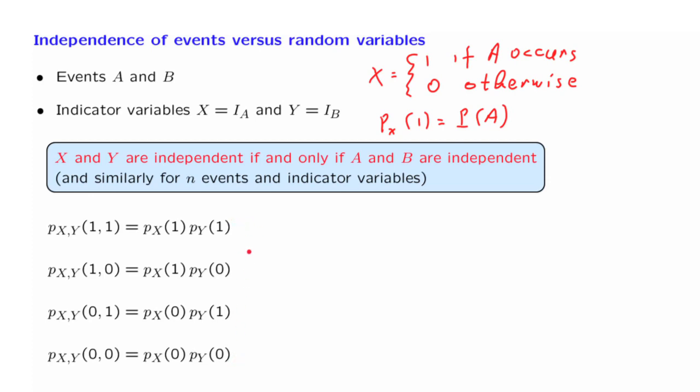So suppose that this is true, that the random variables are independent. Let us take this first relation and write it in probability notation. The random variable X taking the value of 1, that's the same as event A occurring. And random variable Y taking the value of 1, that's the same as event B occurring. So the joint PMF evaluated at (1,1) is the probability that events A and B both occur. On the other side of the equation, we have the probability that X is equal to 1, which is the probability that A occurs. And similarly, the probability that B occurs.